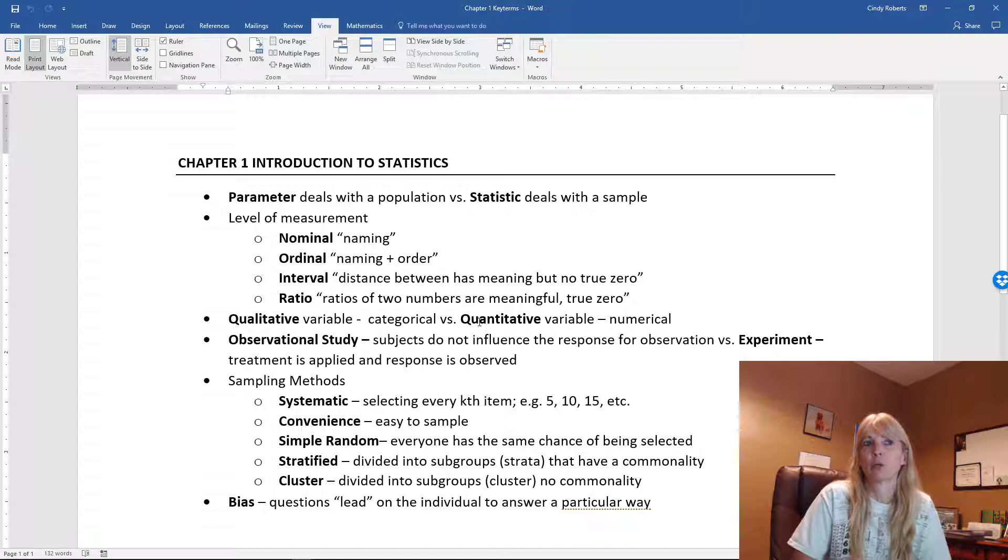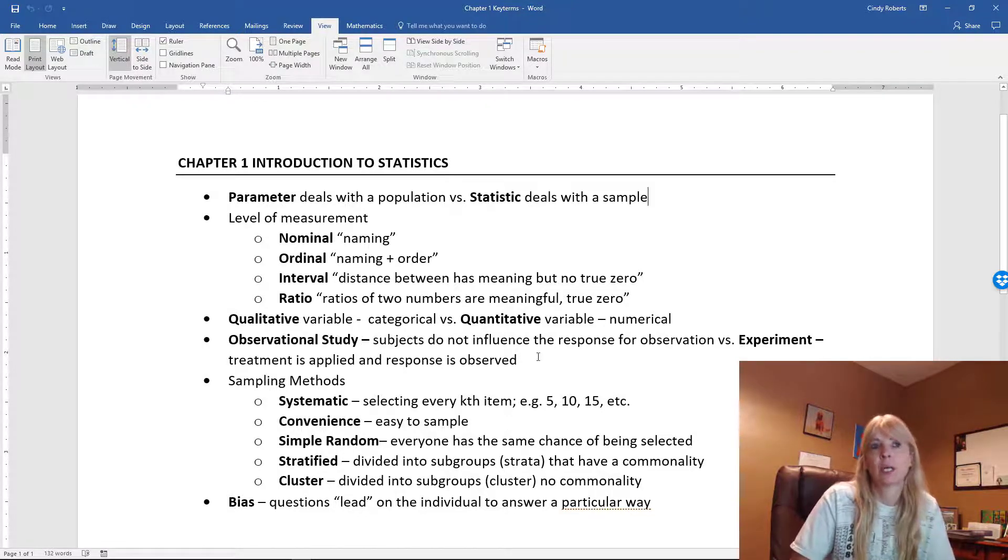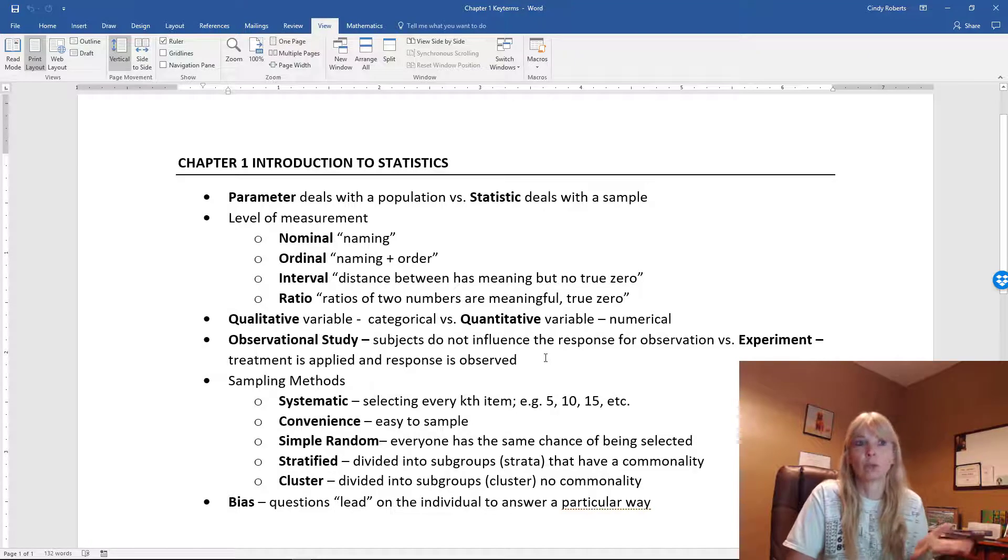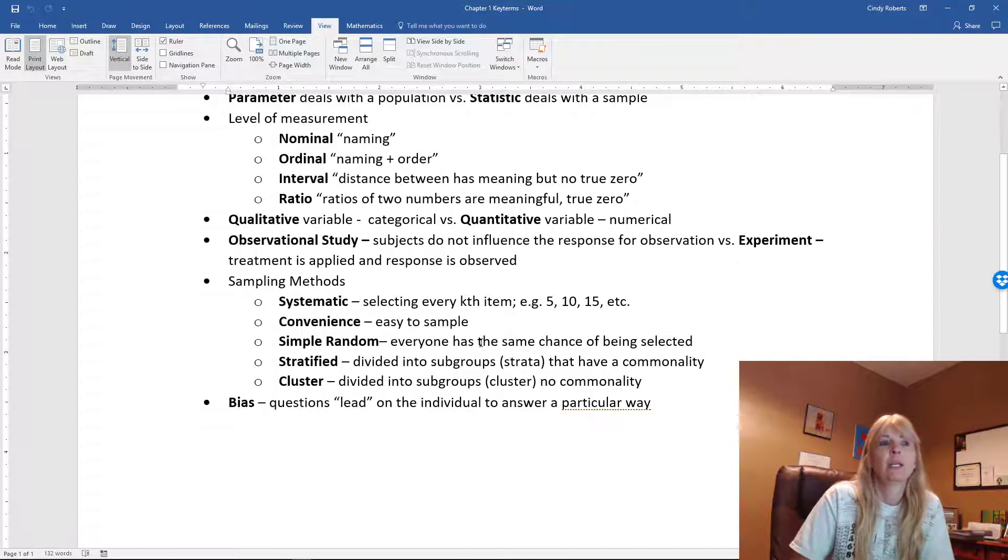And then we get into an observational study versus an experiment. An experiment, you actually apply some treatment to the individual response, whatever, and then see what happens. Observational study is what it sounds like: you just observe and see what's happening. Different ways you can get data with sampling.